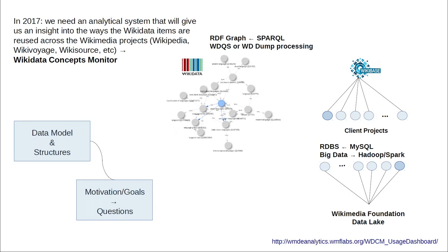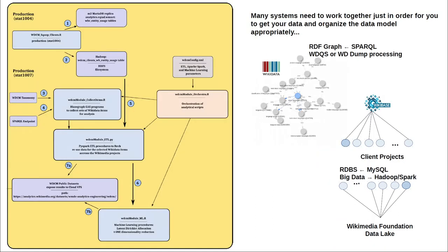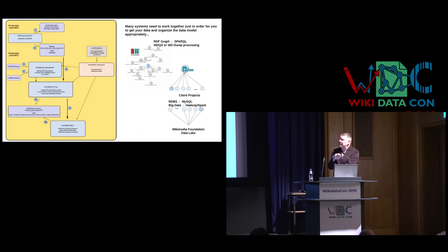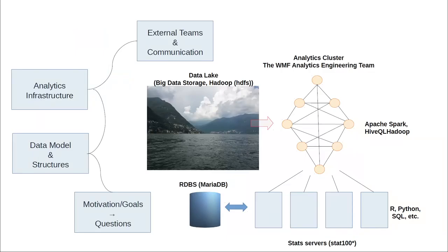Not all data in analytics — especially in big systems like Wikidata and Wikipedia — are immediately available. One source of complication before you start solving a scientific problem is engineering the datasets and preparing the structures you actually need for doing machine learning and statistics. This is the full design of the system called the Wikidata Usage Monitor to track reuse statistics. The obvious complication is that many systems need to work together — you have to synchronize many different data sources, infrastructures, and teams just to make it happen.